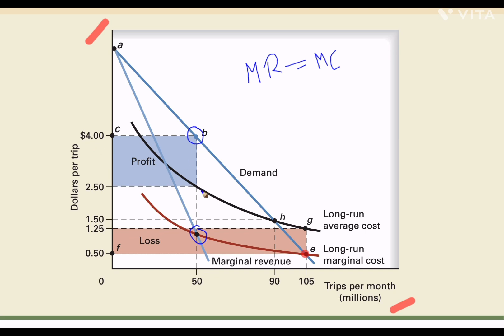This firm running a metro in a city is able to generate abnormal profit — super-normal profit or positive economic profit — depicted by the difference between the average revenue curve and the average cost curve. That difference represents average profit. Total profit equals average profit multiplied by total number of trips, and the entire shaded area represents the super-normal profit of the firm.